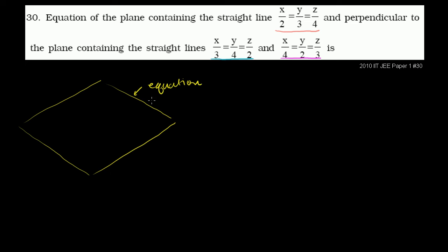We need to find the equation of this plane. We know this plane contains this line. If we look at it, this line contains the point (0, 0, 0) — if x, y, and z are all equal to 0, then all sides of these equations are 0. It also contains the point (2, 3, 4), because if x=2, y=3, and z=4, then all of these are going to be equal to 1.